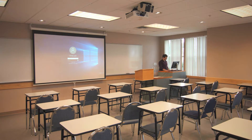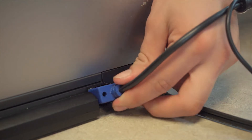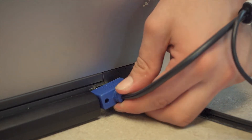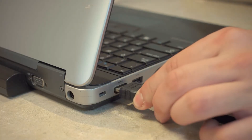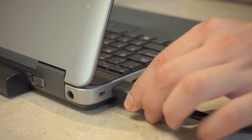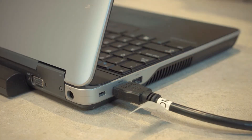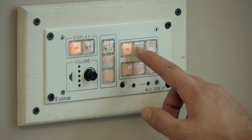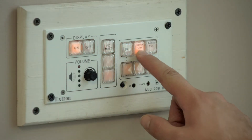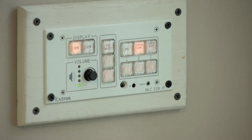To use a laptop, simply plug in the VGA or HDMI cable into its corresponding input. On the Extron wall panel, select the source that you are using — in this case, HDMI.